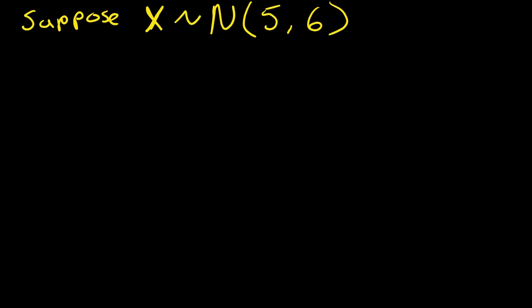Whenever you write this N and then open parentheses, the first number is always mu, which is the mean of the normal distribution. And 6 is the standard deviation for the normal distribution.